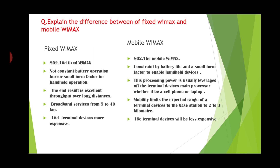Now we will see the differences between fixed WiMAX and mobile WiMAX. Fixed WiMAX is 802.16d and mobile WiMAX is 802.16e. Fixed WiMAX does not have constant battery operation or small form factor for handheld operations. Mobile WiMAX is constrained by battery life and small form factor to enable handheld devices. The end result for fixed WiMAX is excellent throughput over long distance, and this processing power is usually leveraged by the terminal device's main processor, whether it be a cell phone or a laptop, for broadband services from 5 to 40 kilometers.